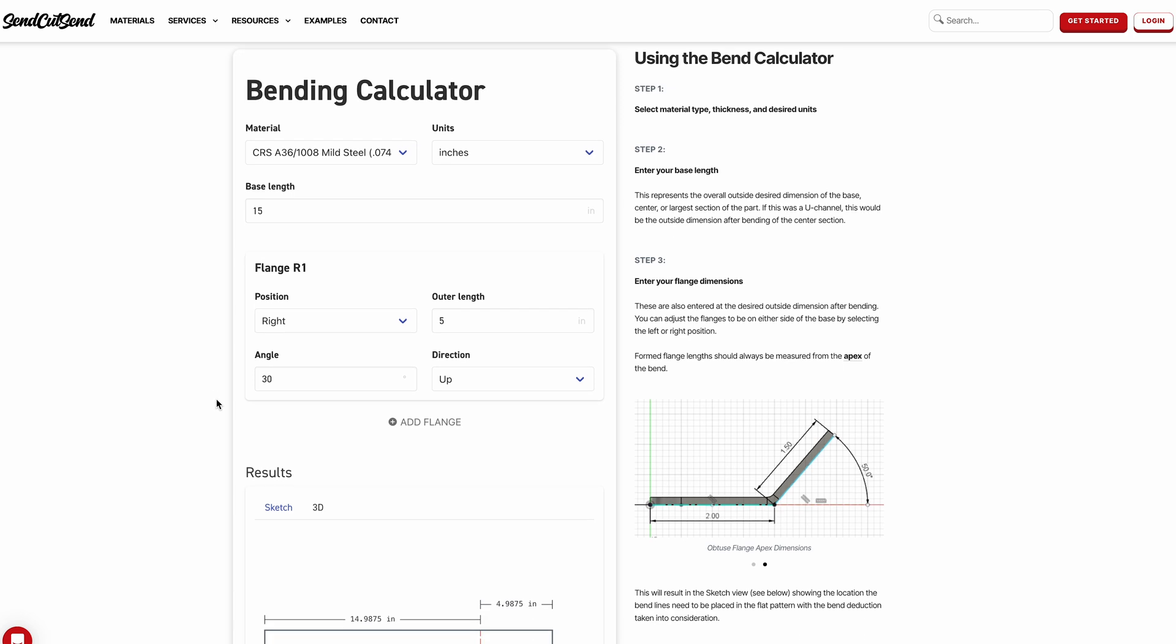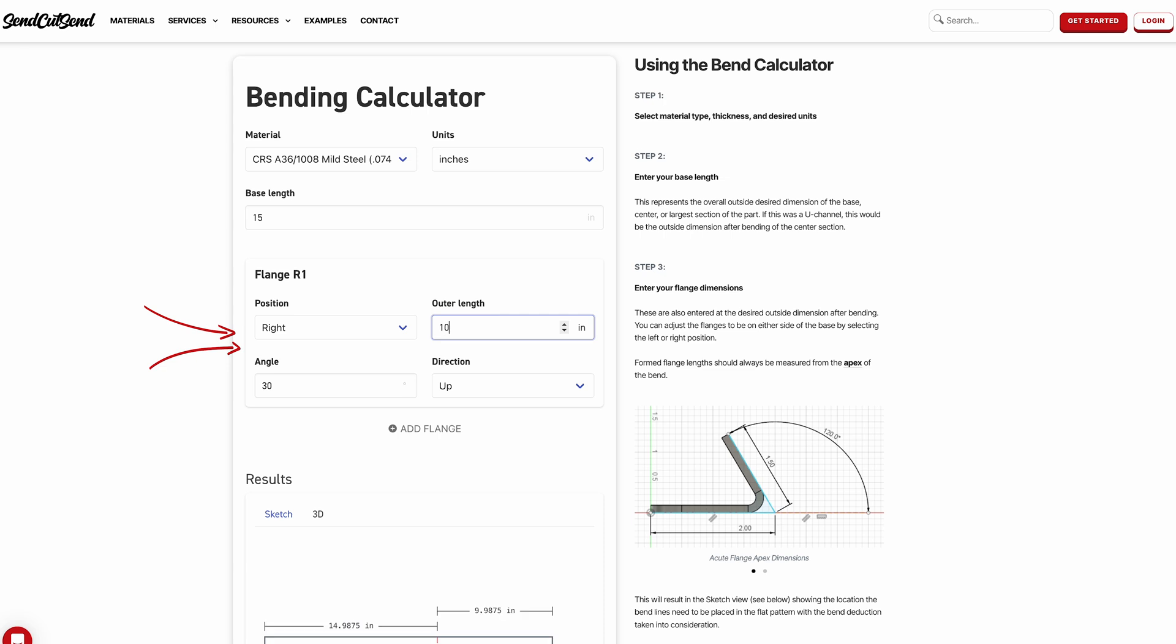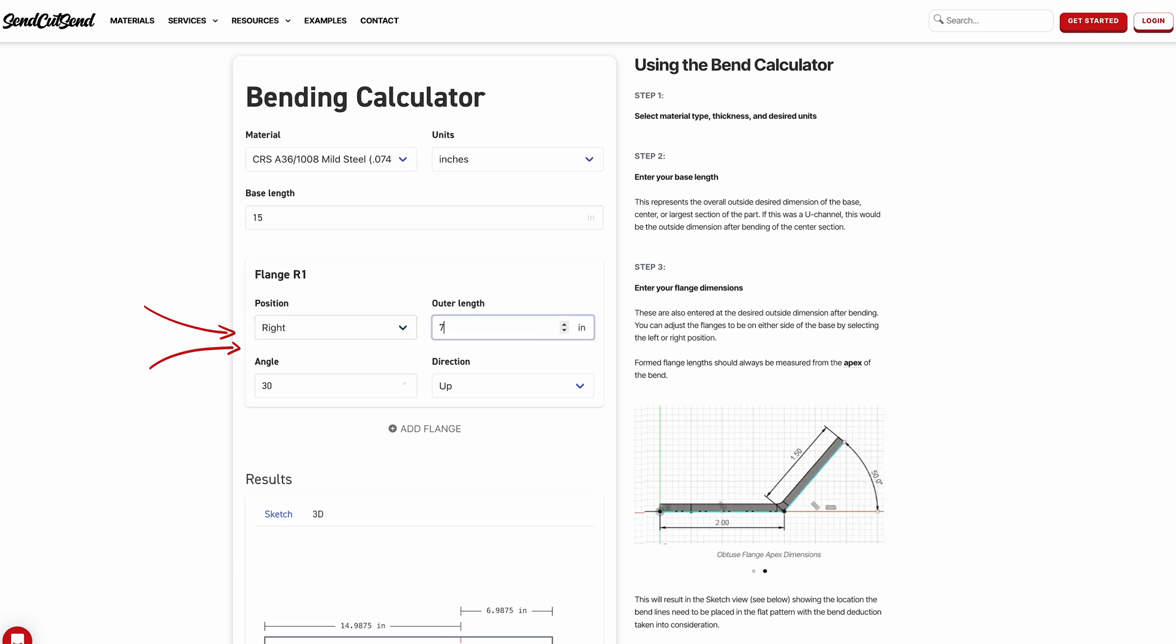Step three we're going to be entering the flange dimensions. Those flange dimensions are going to be the length from the bottom of your flange to the outside of your flange so that you get the final dimension length that you want with that angle that you want.